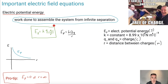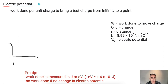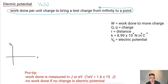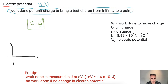Just to remind you, EP is measured in joules. Now let's look at electric potential. If you've looked at circuits before, this should make more sense. Electric potential is measured in volts, and it's the work done per unit charge to bring a charge from infinity to a point. The equation in our data booklet is VE equals K times capital Q over R, because we're bringing a test charge in.